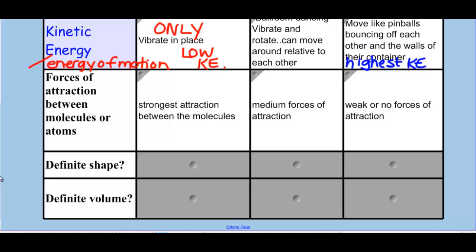Definite shape and volume. Solids have both. The shape doesn't change. The volume doesn't change if you put it in a rectangle. Liquids have a definite volume, but the shape changes. So they don't have a definite shape, and I'll show you an example of that in class. And then gases have neither. They have no definite shape and no definite volume. Gases do not have neither. They take the shape and volume of their container.